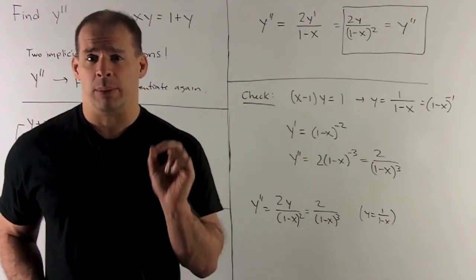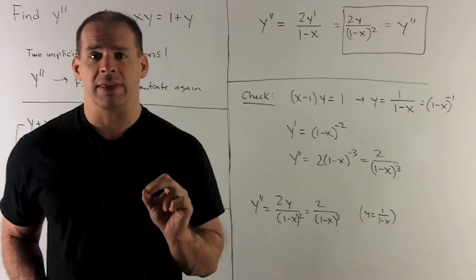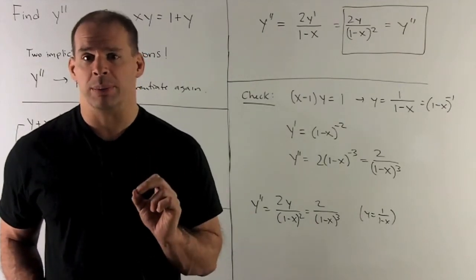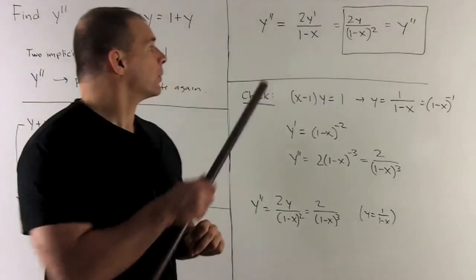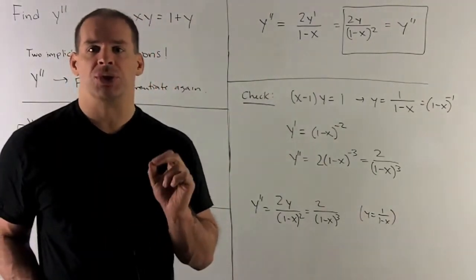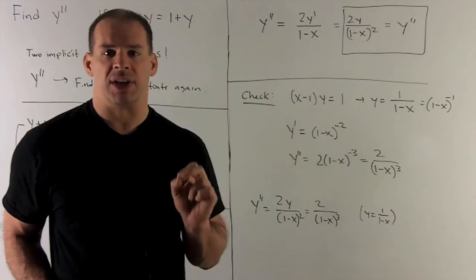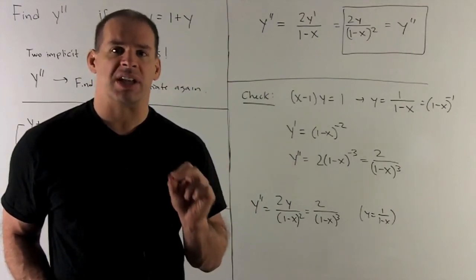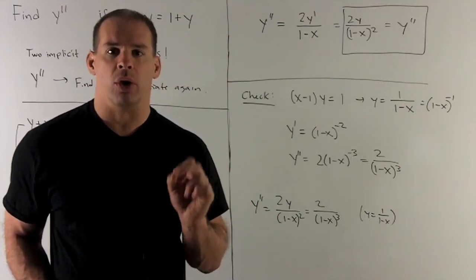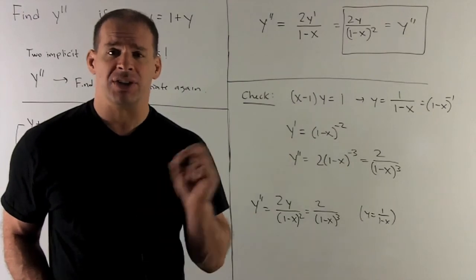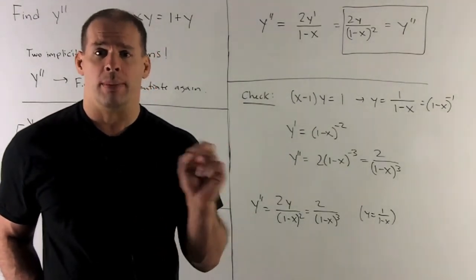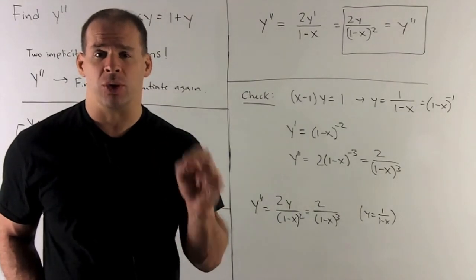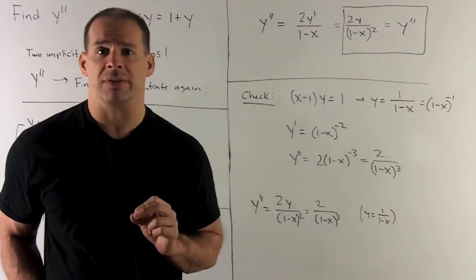So that's y double prime. Let's see how we would get that from our old way using implicit differentiation. Well, where that stops is y double prime equals 2y over 1 minus x squared. But now note, we just solve for y. y is equal to 1 over 1 minus x. So if I substitute that into our y double prime, we wind up with 2 over 1 minus x cubed. And that agrees with what we get with the straightforward differentiation.